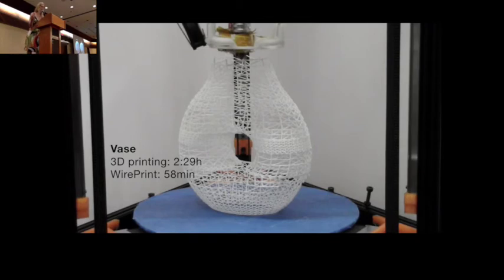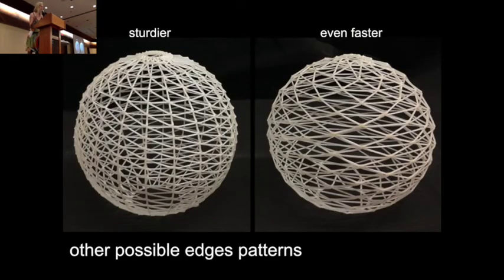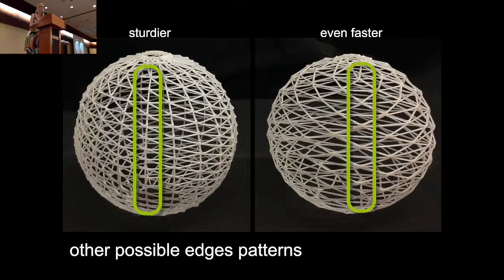The printing constraints still allow for several ways to generate printable wireframes. On the left side you see the approach that I've used so far and it is particularly sturdy as all the vertical edges are aligned. On the right side you see a different edge pattern and here the vertical lines are actually left out, which makes it less sturdy but even faster.